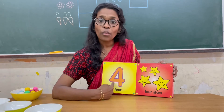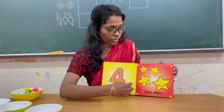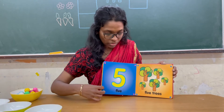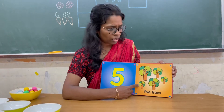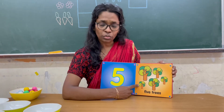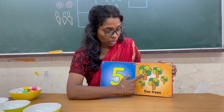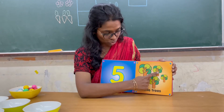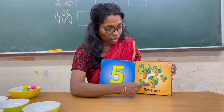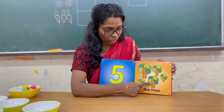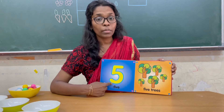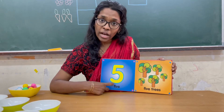That's the number 4. And then comes some trees — how many trees do we have? Let's count: 1, 2, 3, 4, and 5. That's the number 5.